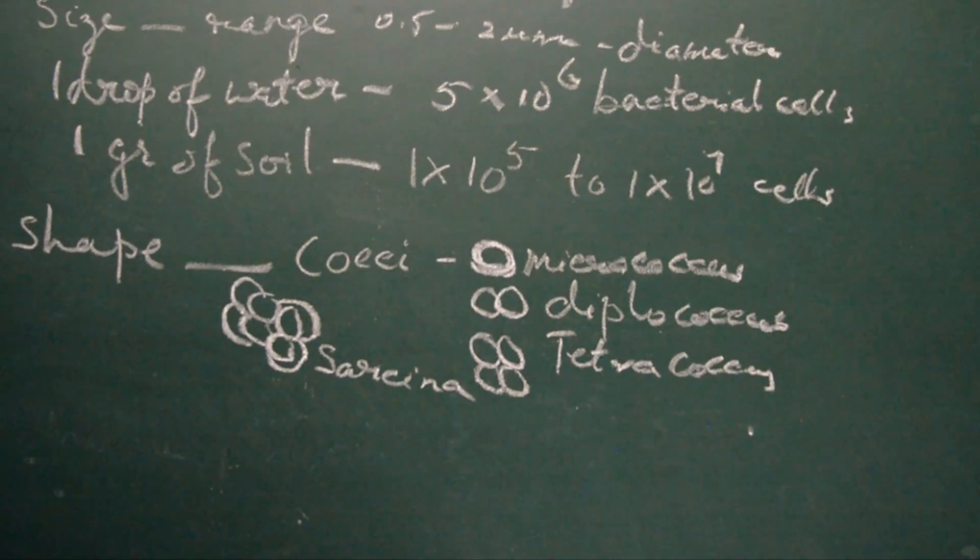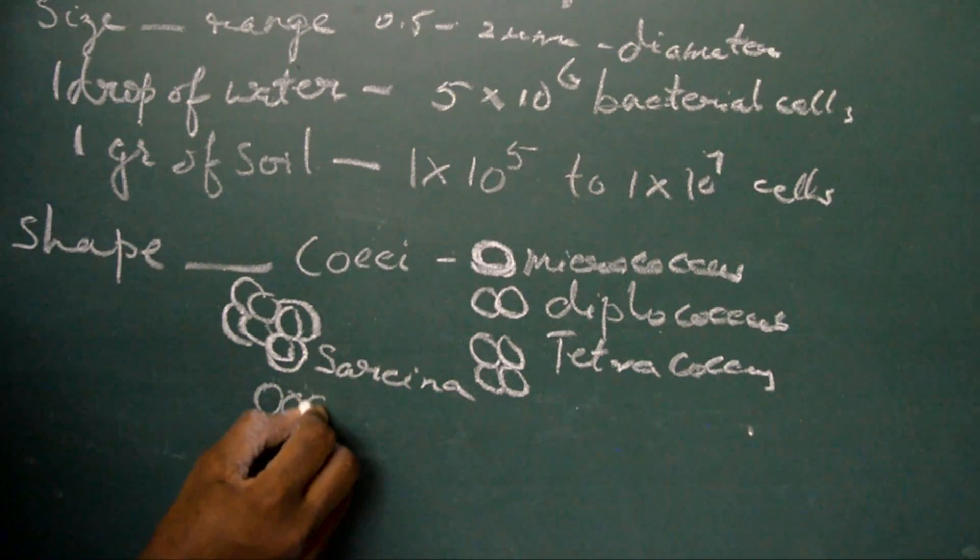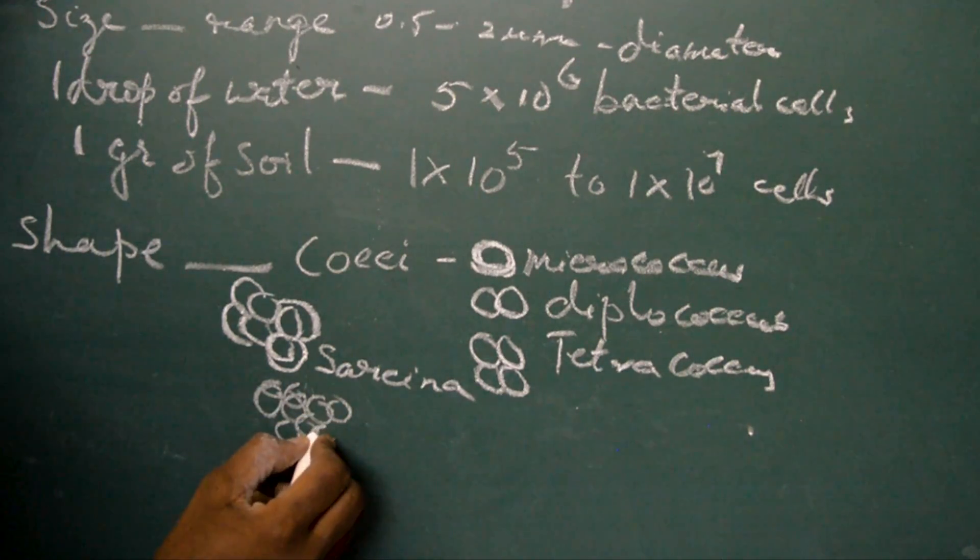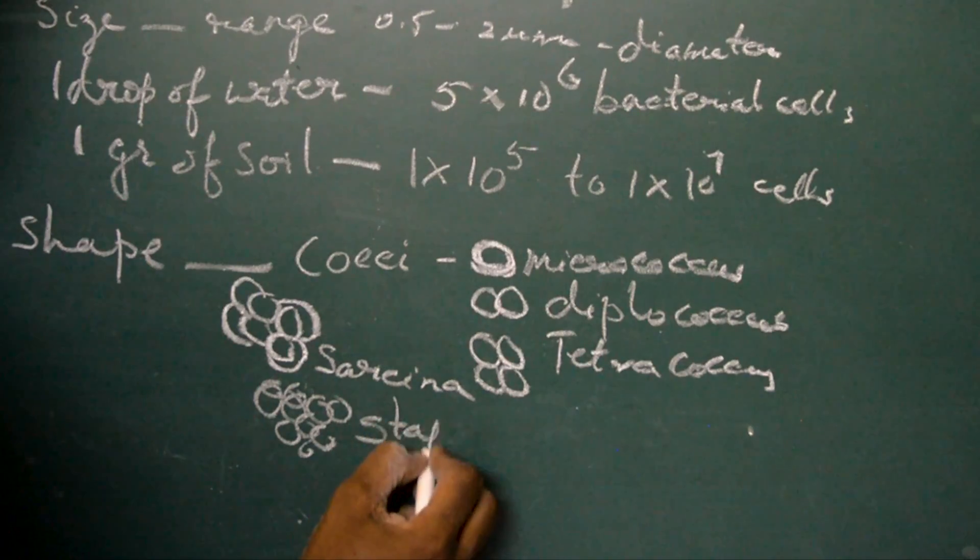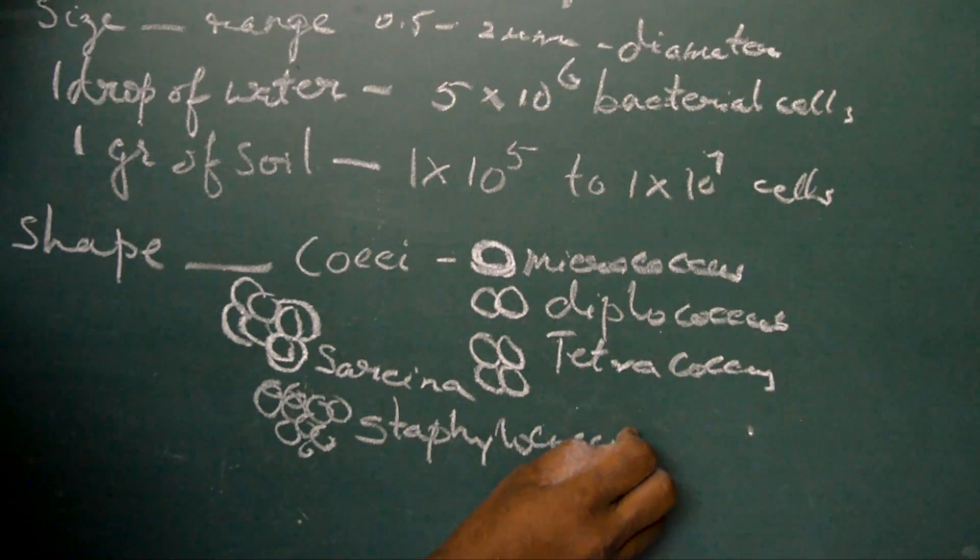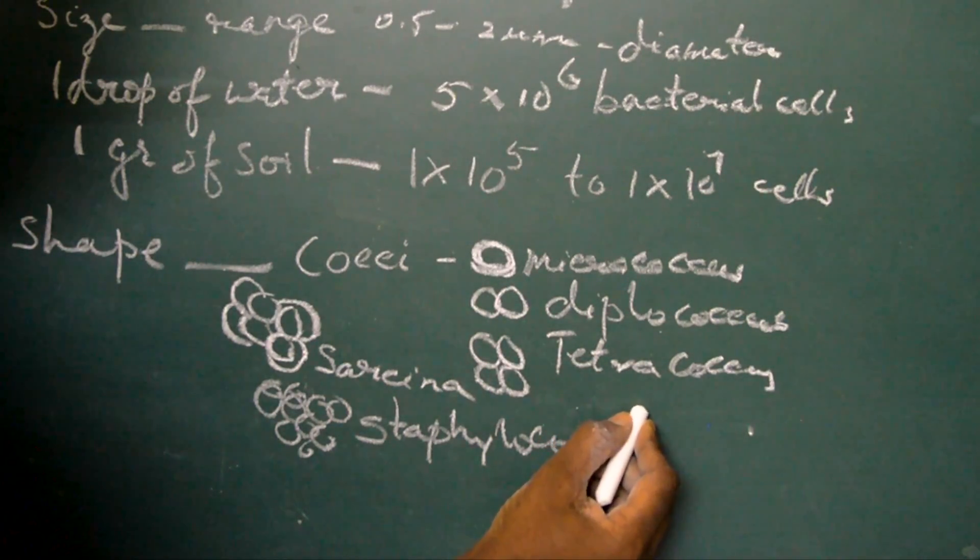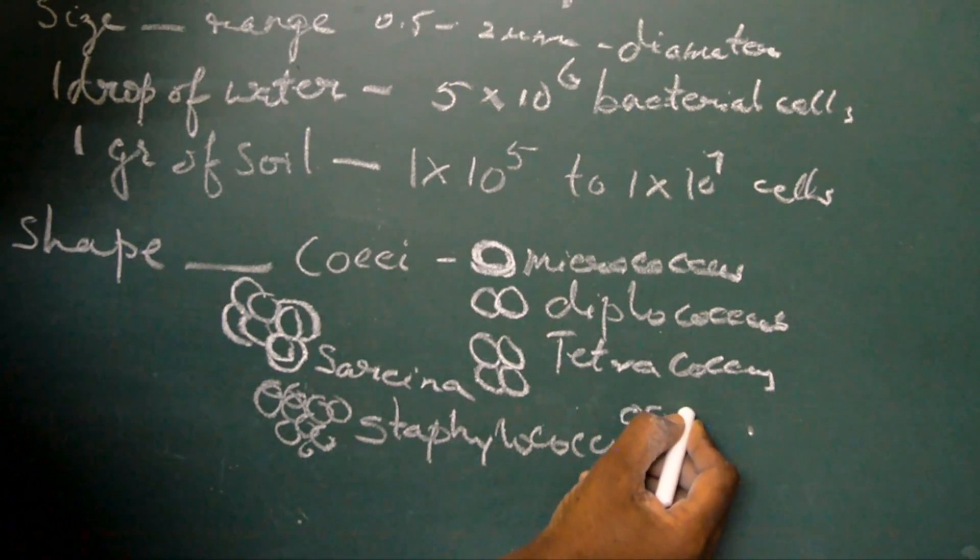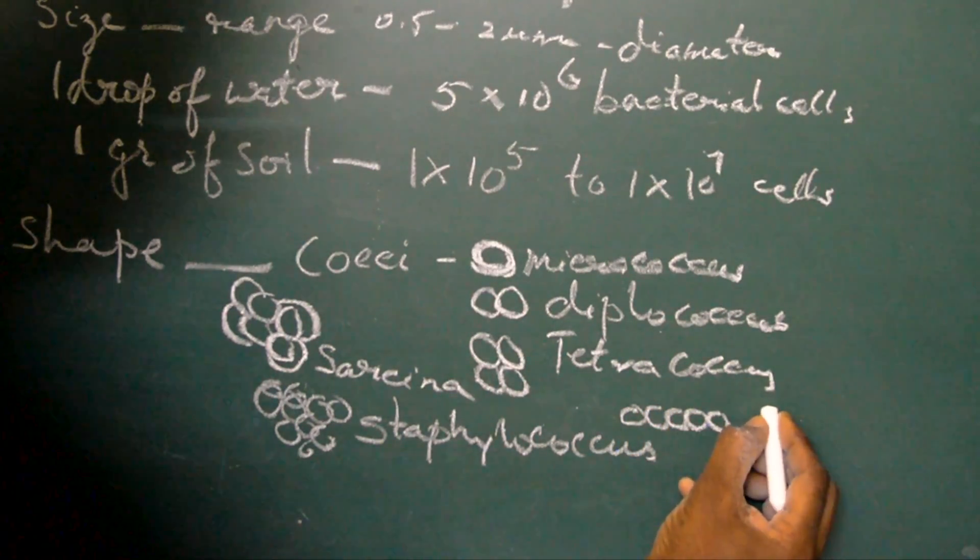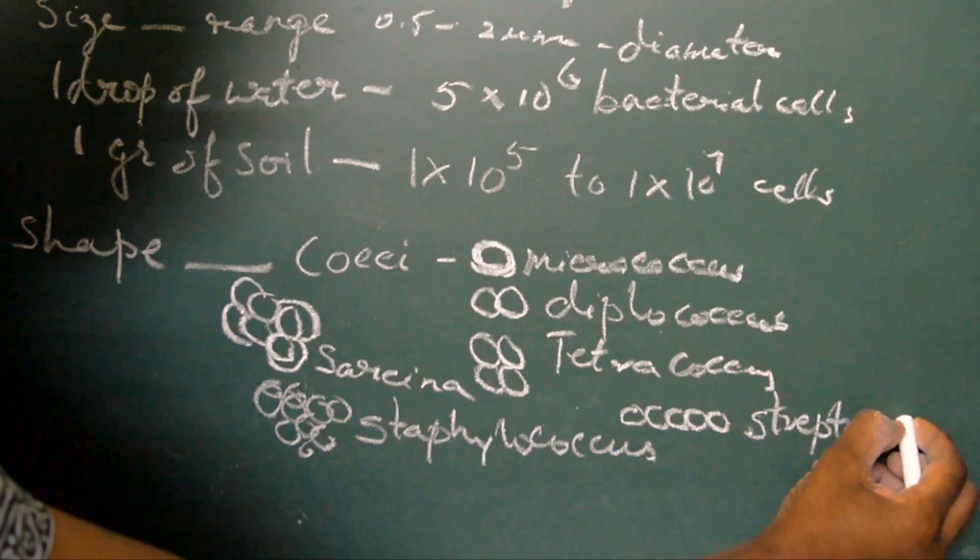Certain cocci type of bacteria appear as bunch of grapes, this is Staphylococcus. Some cocci appear as chain, these are the streptococcus type of bacteria.